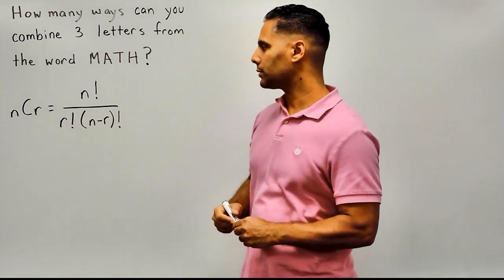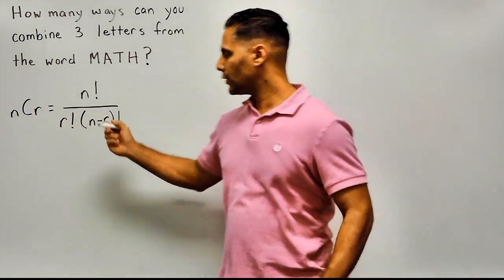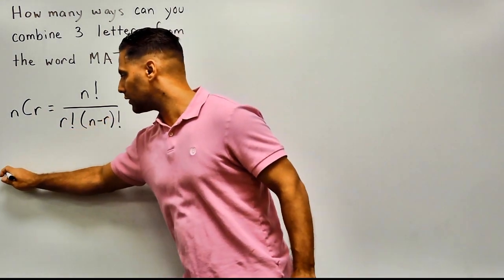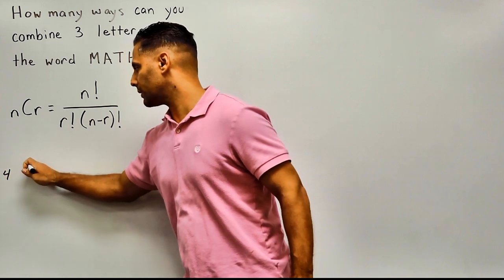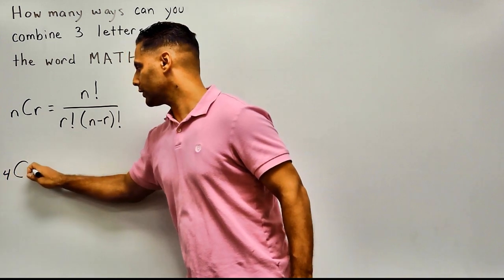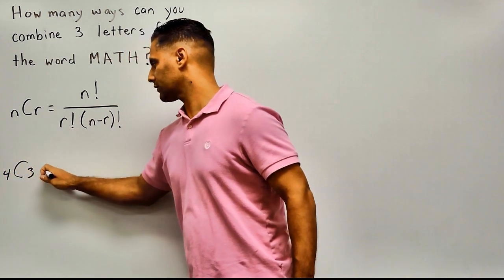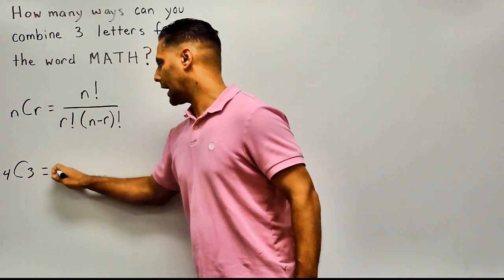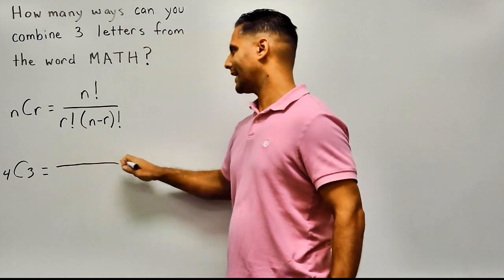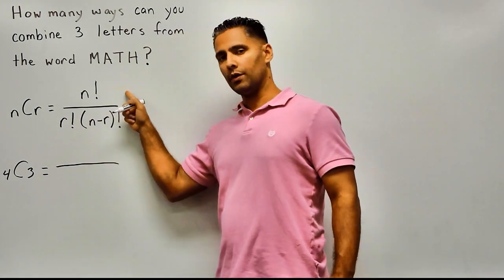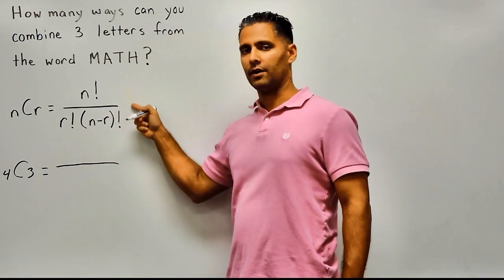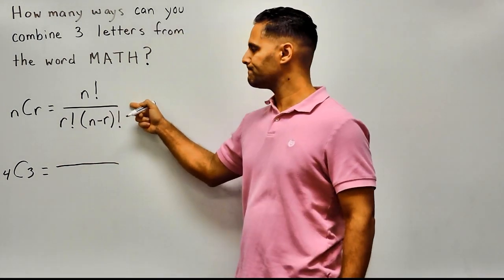In this problem, we have a total of four objects and we want to combine three of those objects. Now that we know the values of N and R, we can substitute those inside of our equation.